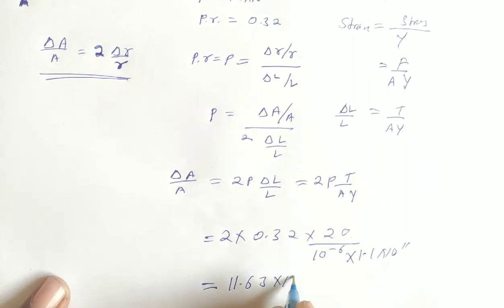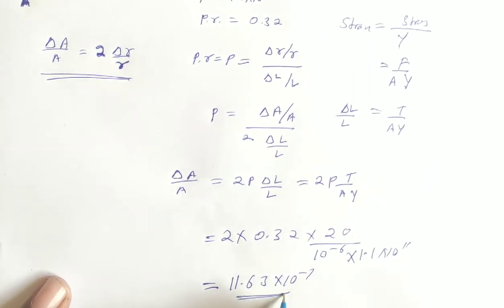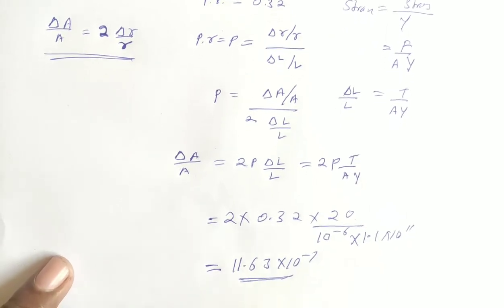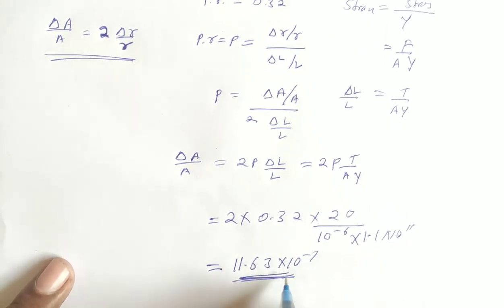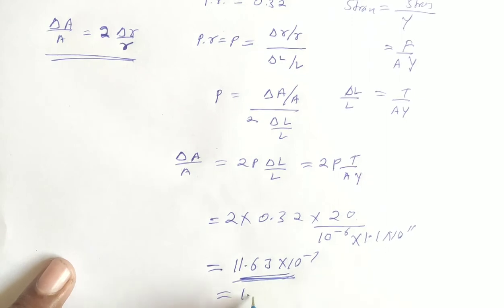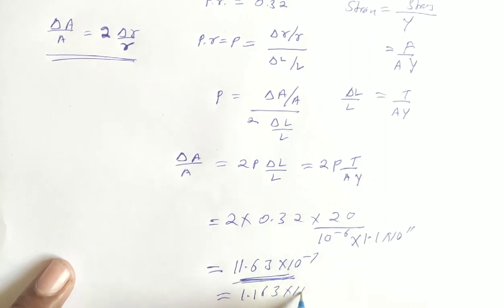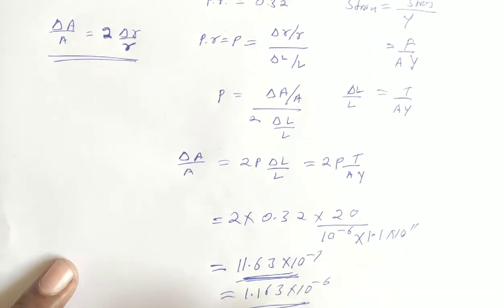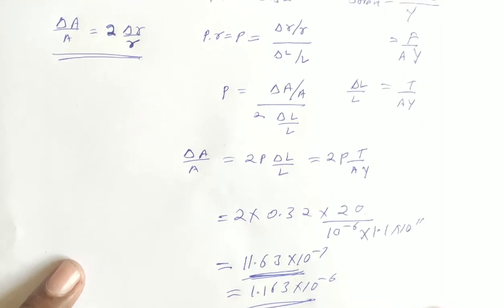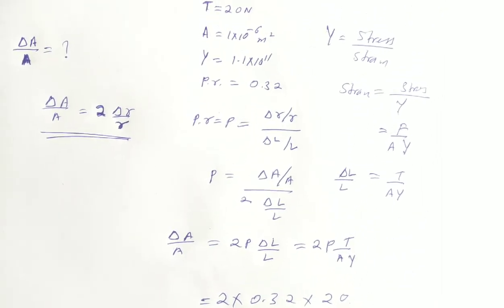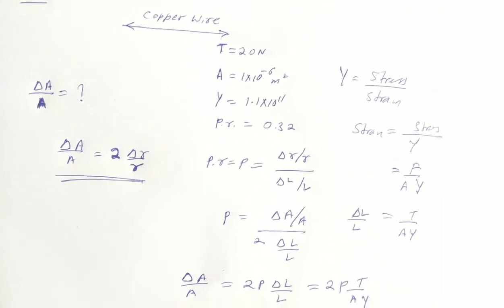Here we have 10 to the power minus 7, this will be our answer. What is the answer? 1.163 into 10 to the power minus 6. If you have any questions about video solutions then subscribe to the channel, then comment box number or TipTop number comment.